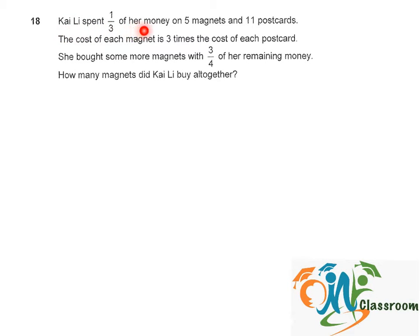Kylie spent one-third of her money on 5 magnets and 11 postcards. The cost of each magnet is 3 times the cost of each postcard. She bought some more magnets with 3 over 4 of her remaining money. How many magnets did Kylie buy all together?